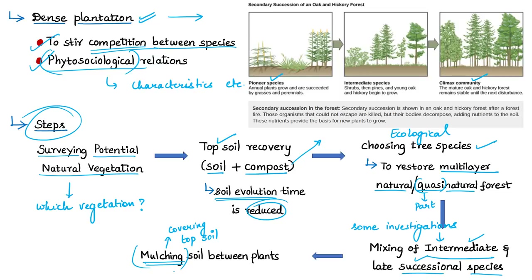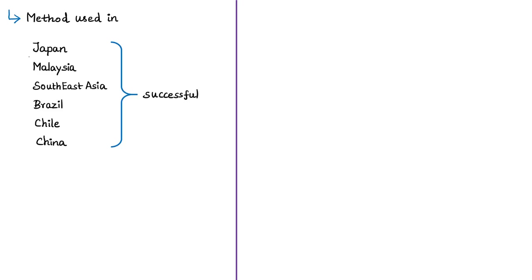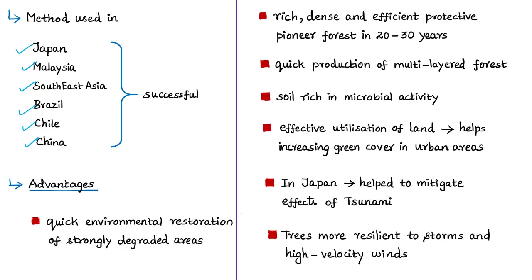The Miyawaki method has demonstrated that multi-layer quasi-natural forests can be built in 20 to 50 years — 20 to 50 years in Japan and 40 to 50 years in Southeast Asia — through ecological reforestation based on natural forest systems. It has been used successfully in Japan, Malaysia, Southeast Asia, Brazil, Chile, and parts of China. Its first advantage is that it allows quick environmental restoration of strongly degraded areas, and it produces a rich, dense, efficient protective pioneer forest in 20 to 30 years.